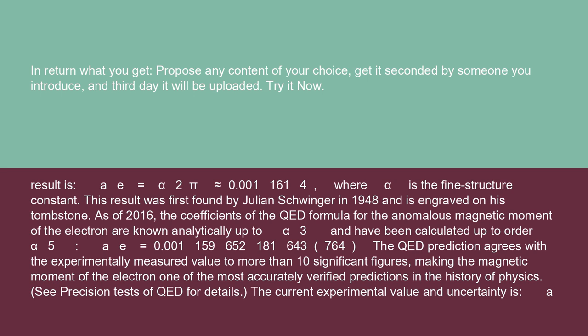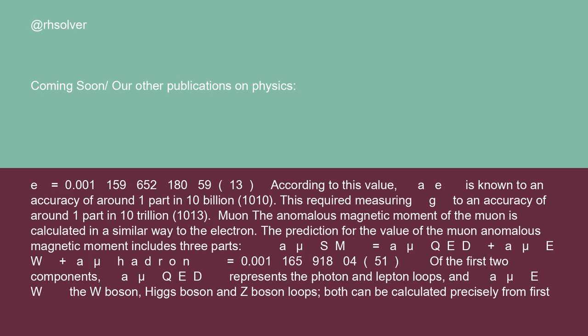The current experimental value and uncertainty is a_e equals 0.0011596521815913. According to this value, a is known to an accuracy of around one part in 10 billion (10¹⁰). This required measuring g to an accuracy of around one part in 10 trillion (10¹³).